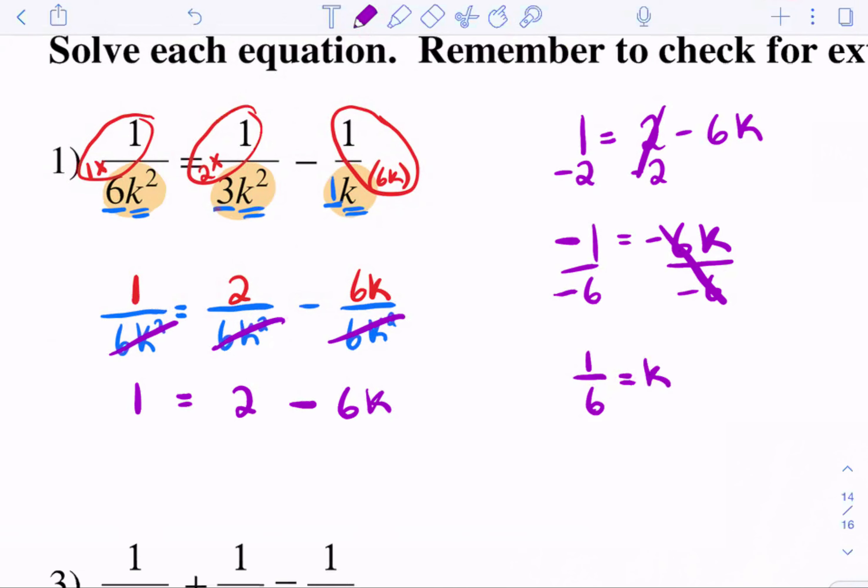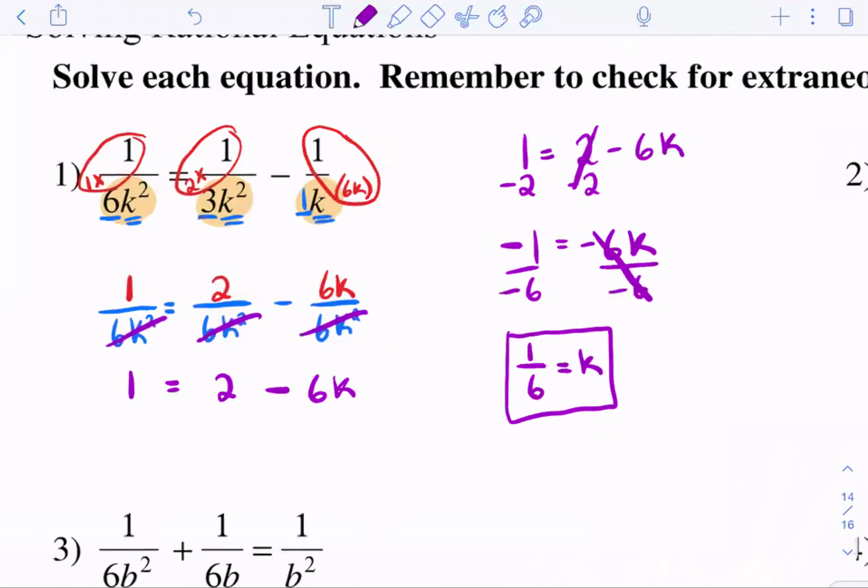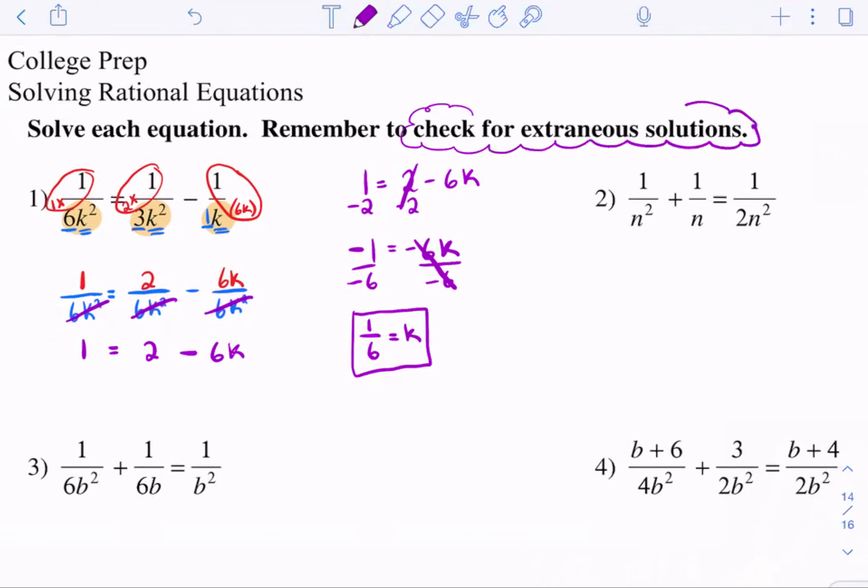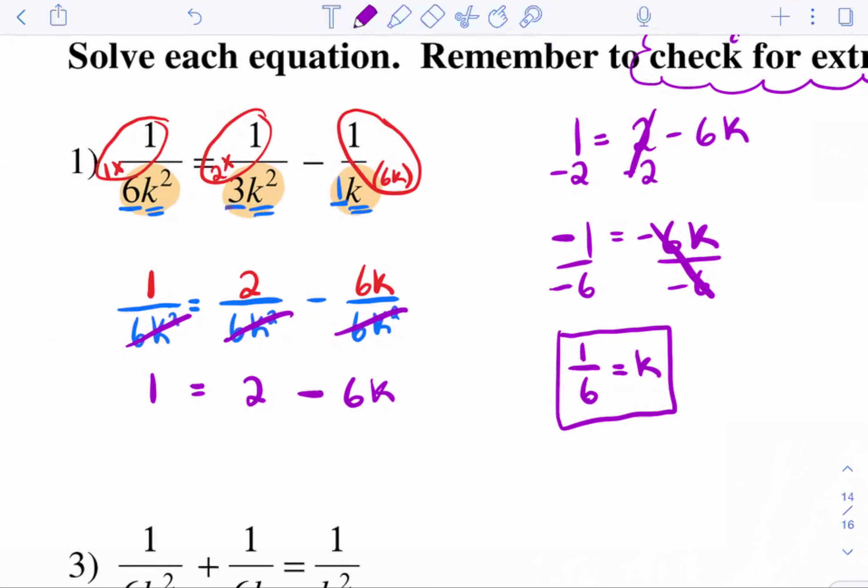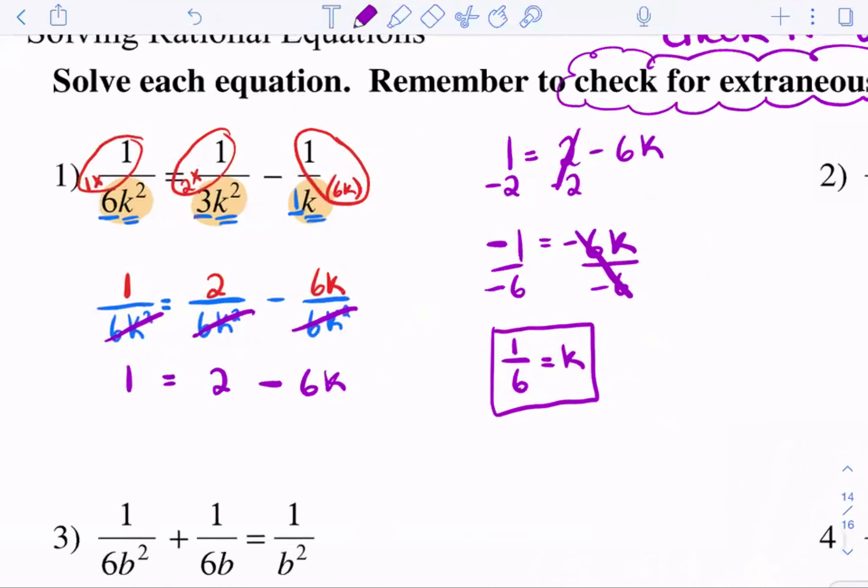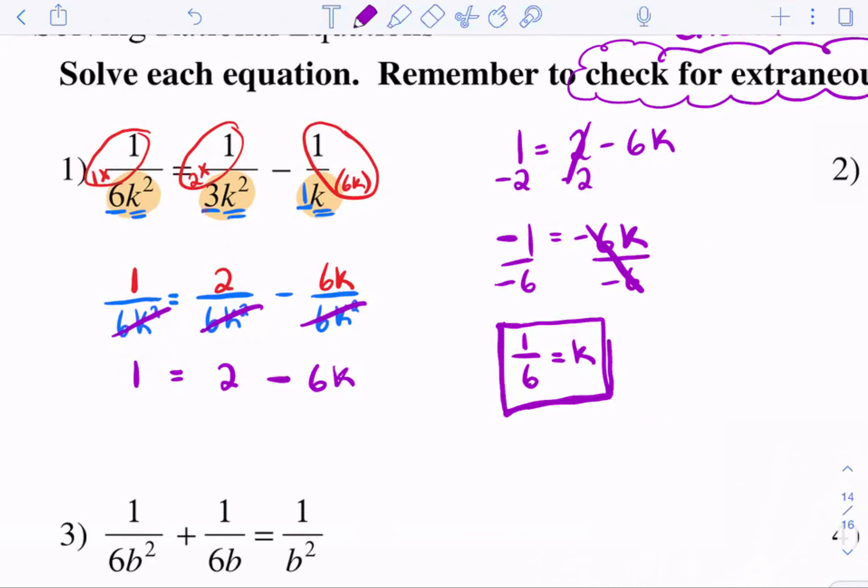And the last thing you just have to check, this is my answer. But I just have to check if I do plug it in here for one of these, will I ever get a denominator of zero? Because I can't have that. That's what you have to check here. To check for extraneous solutions means check if the denominator equals zero. Because if that happens, then it cannot be an answer. For example, if here K was zero, all of this would end up being zero, which is not possible. So this is your final answer. K equals one-sixth.